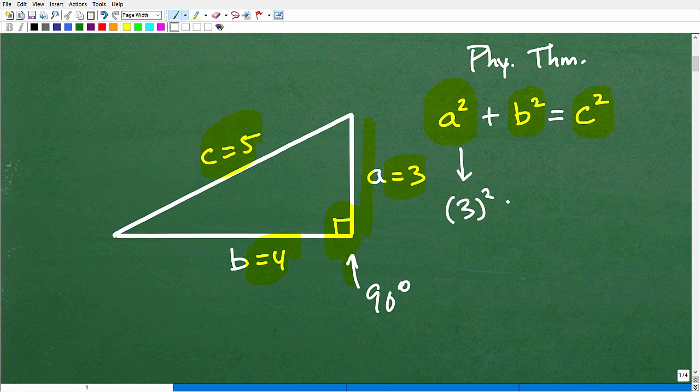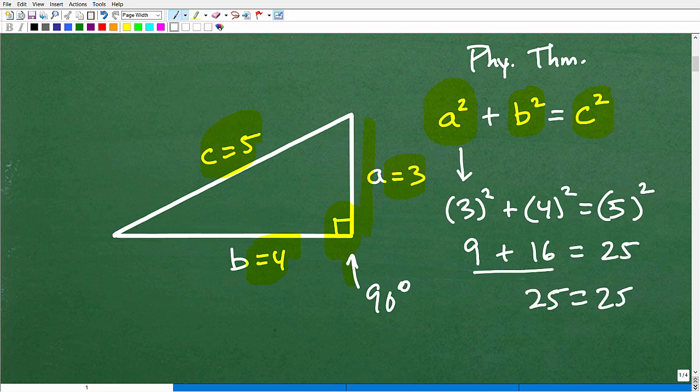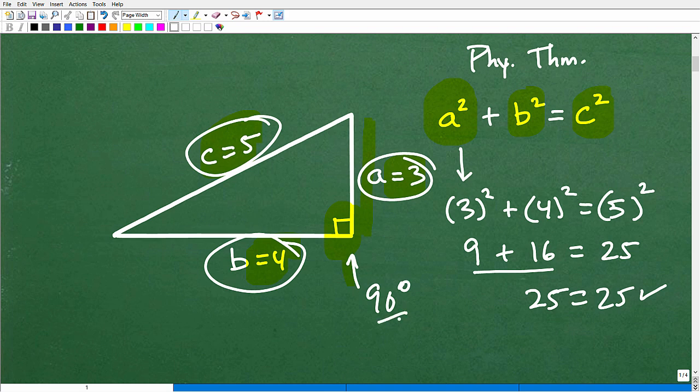So that would be 3 squared. This would be 4 squared. And is that equal to 5 squared? Let's go ahead and see. This is 9 plus 16, and this is 25. 9 plus 16 is 25. 25 is equal to 25. So yes, indeed, these lengths, 3, 4, 5, are the lengths of an actual right triangle.